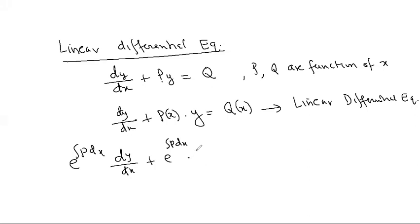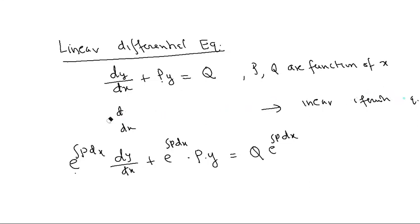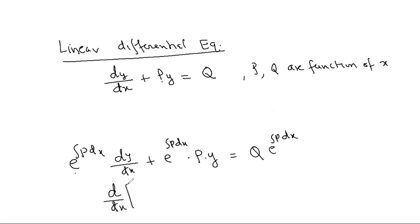So this is multiplied — p will come here, y will be there, and q will be there. Here also integral p dx. Everywhere I multiplied with this — every term I multiplied with e raised to integral p dx. When I do this, the benefit you notice is the left-hand side is the derivative of y into e raised to integral p dx.